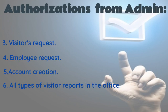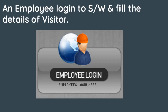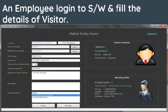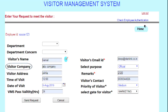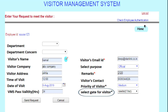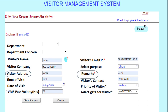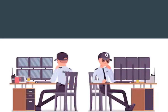An employee logs into the software and fills in the details of the visitor who will come to meet them. They fill all required fields such as visitor's name, company name, time duration for meeting, gate selection for limited area access, meeting purpose, company address, any other remarks, and then forward it to the concerned person.